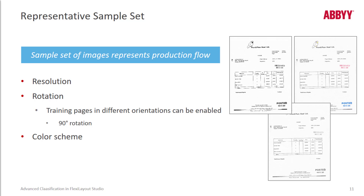You can train the classifier to work with images, text, or both. To train the classifier, you have to create a representative set of images — the classifier needs samples of all variations that will appear in production, which will improve classifier results. Regarding small distortions such as skew and other defects: if in production these defects are corrected before classification, don't include them in the training sample set. If the classifier has to process such documents, then do include them — this makes the sample set representative.